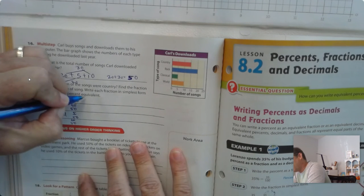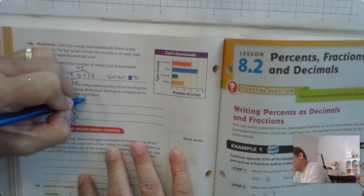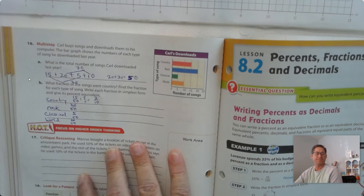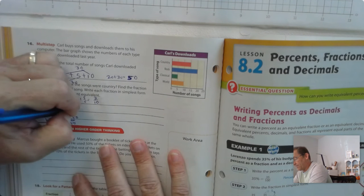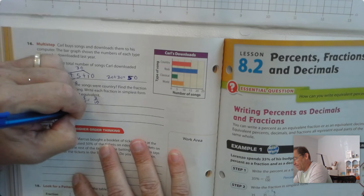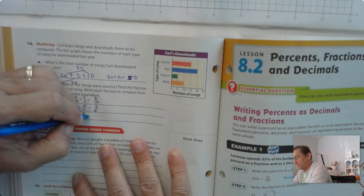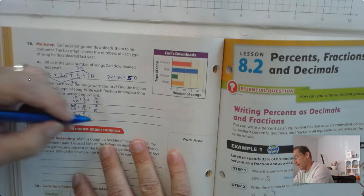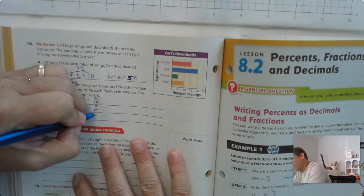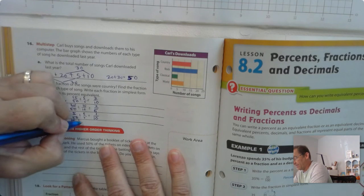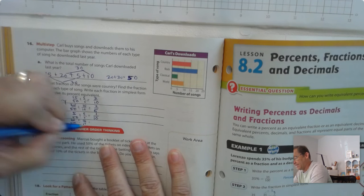So if we simplify 15 fiftieths, we'd get 3 tenths. If we simplify 20 fiftieths by dividing by 10, we'd get 2 fifths. If we simplify 5 fiftieths by dividing by a greatest common factor of 5, we'd get 1 tenth. And 10 fiftieths divided by a common factor of 10, we'd get 1 fifth.